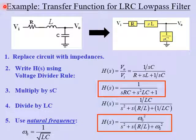Let's look at an example. In this particular example, we're given the circuit diagram of an LRC low-pass filter with a resistor, an inductor, and a capacitor configured like this. The input voltage is over here, and the output is taken at the capacitor. The first step is to replace the circuit elements with their corresponding impedances. R becomes R, L becomes SL, and C becomes 1 over SC. This is the equivalent circuit in the frequency domain using impedances.